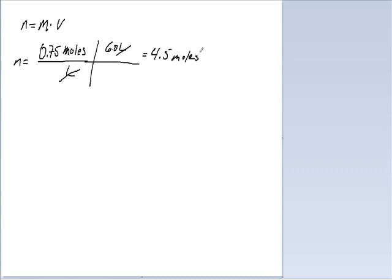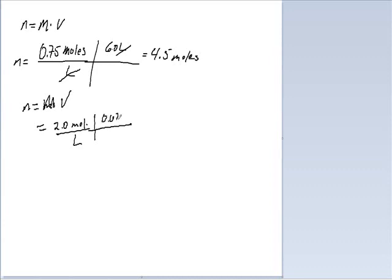How many grams of calcium chloride are needed to make 625 milliliters of a 2 molar solution? Remember n equals big M times V. We take 2.0 moles per liter times 0.625 liters, and we get 1.25 moles.